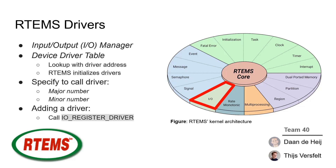Let's take a look at how RTEMS handles drivers. The IO Manager handles the accessing of device drivers, including reading and writing to a driver. Drivers can be found in the device driver table, and an application specifies the address of this table in its configuration table, so RTEMS will initialize the drivers contained within it. To call a driver with the IO Manager, an application must specify a major and minor driver number. The major number is the index of the driver in the device driver table, while the minor number depends on the driver.